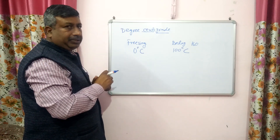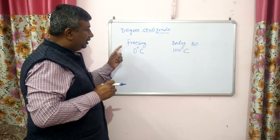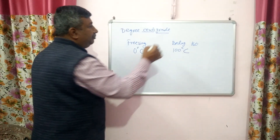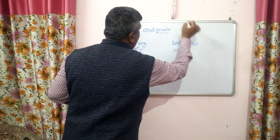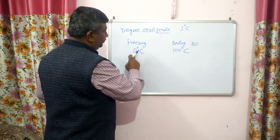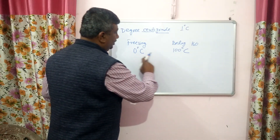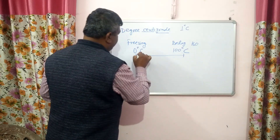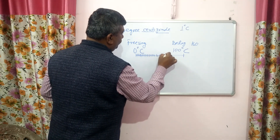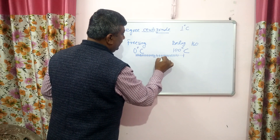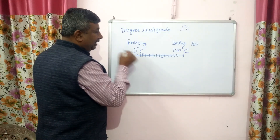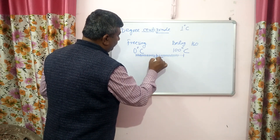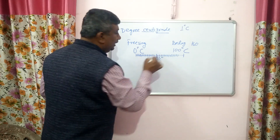The general understanding is that freezing is considered as 0 degree centigrade and boiling is considered as 100 degree centigrade. One part means 1 degree centigrade. If we make a scale from 0 to 100 and divide it into 100 equal parts, each part is 1 degree centigrade. For example, 20 degree centigrade is the 20th mark on that scale.